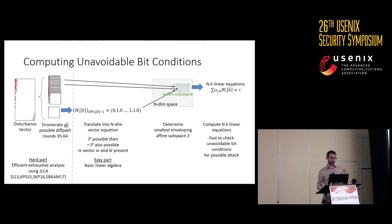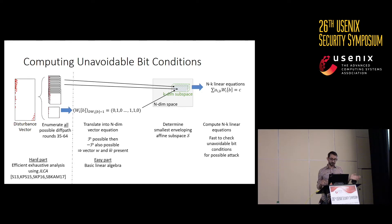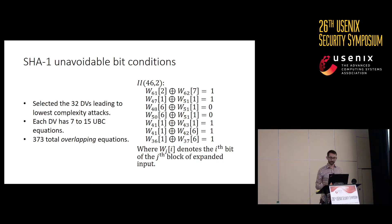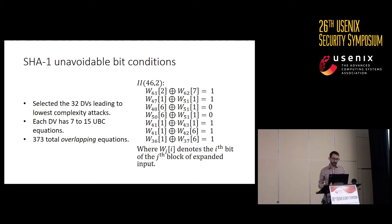The exhaustive analysis using joint local collisions — the hard part — is backed up by quite a bit of hash function cryptanalysis literature. The right part is just easy: it's linear algebra once you translate those differential paths into vector equations. As a concrete example, for a given disturbance vector the unavoidable bit conditions are seven parity equations on the expanded message input. We selected the 32 disturbance vectors leading to the lowest complexity attacks and computed the UBCs from them. Each disturbance vector has seven to 15 UBC equations, for a total of 373 overlapping equations.